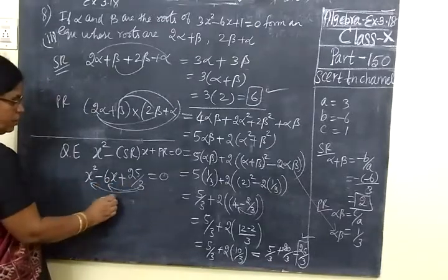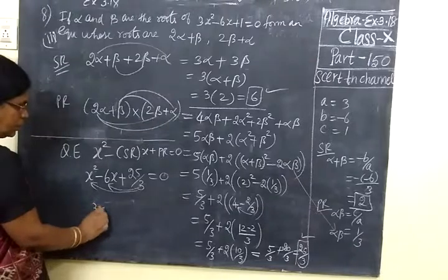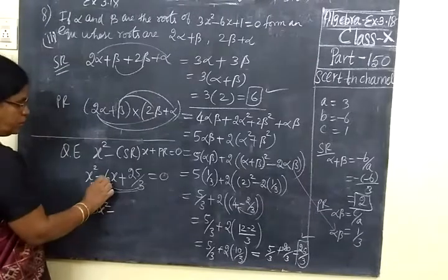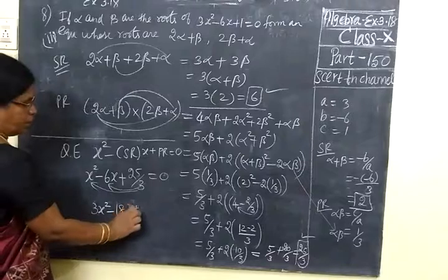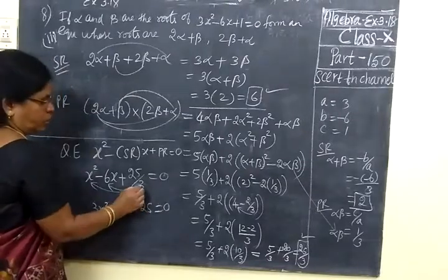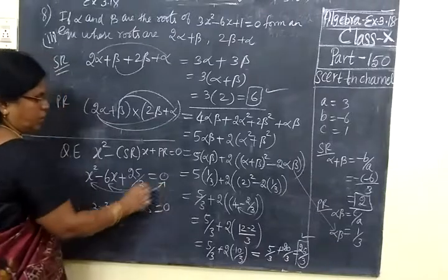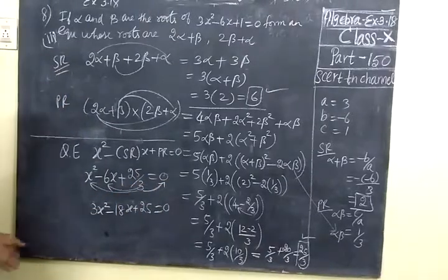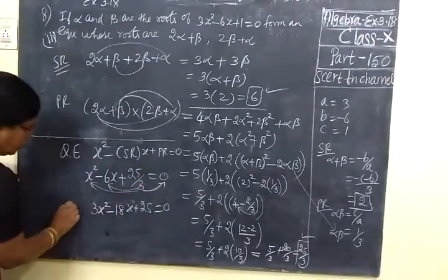Now take 3, 3 is the LCM. 3 x squared minus 3 into 6x, 18x plus 25 equal to 0. Denominator when it goes this side, 3 into 0 is 0. This is the required quadratic equation.